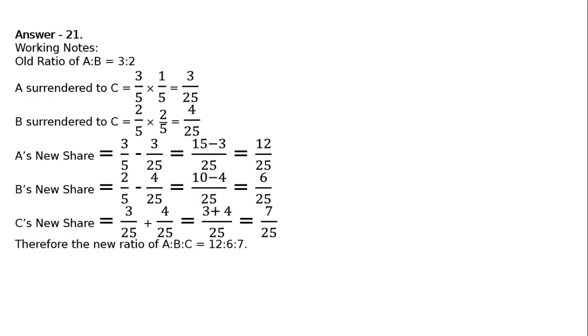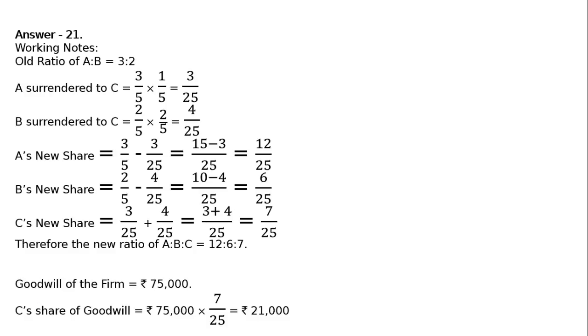Therefore, the new ratio of A to B to C is equal to 12 to 6 to 7. But we have nothing to do with the new ratio — we have to find out the sacrificing ratio. Goodwill of the firm is Rs. 75,000, and C's share of goodwill is 75,000 multiplied by 7 upon 25, that is Rs. 21,000.